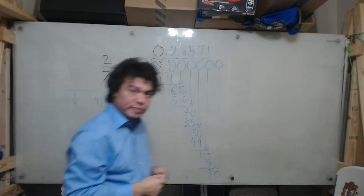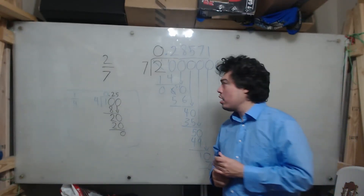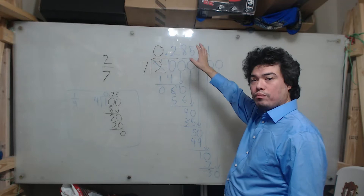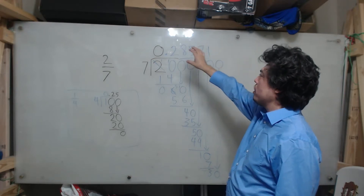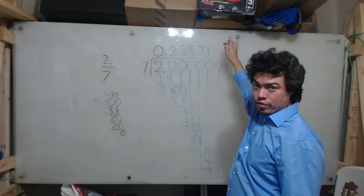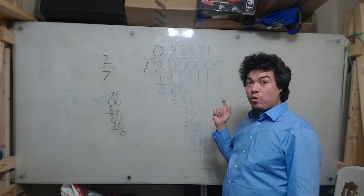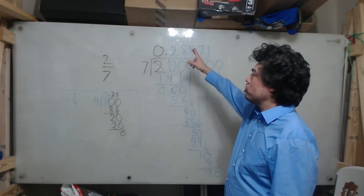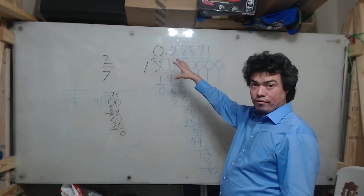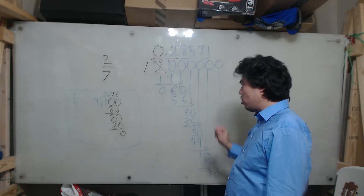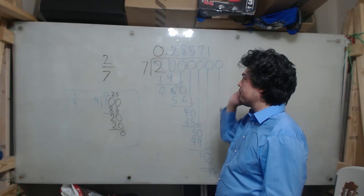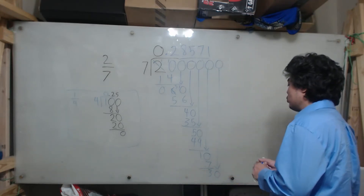Now, another possible situation is that the decimal starts repeating itself. If it repeats itself, then we only have to write one instance of the part that repeats and then put a bar over that part. There are some cases where we won't see where it repeats because it could be very far off. But all fractions will have a repetitive part — all fractions can be represented either as terminating or repeating decimals. So then we can continue with our problem.